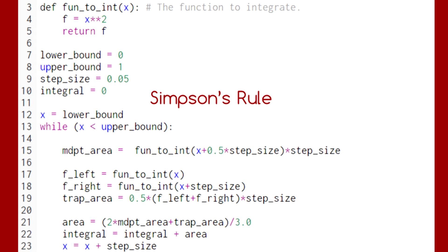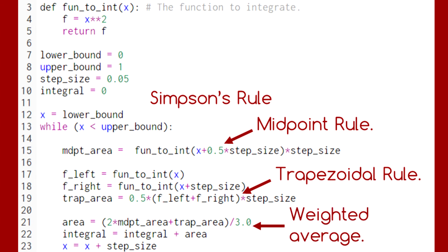It turns out you can combine these two results in Simpson's rule. Here, we're calculating the area given by the midpoint rule. Here, we're calculating the area given by the trapezoidal rule. Finally, we construct a weighted average so that their errors cancel.